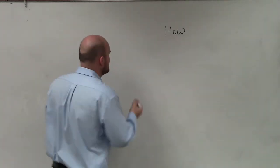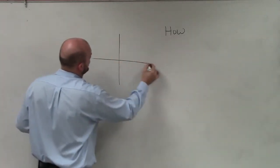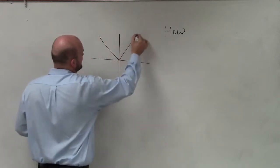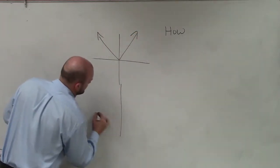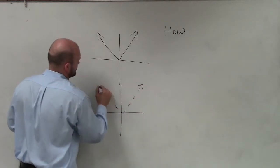Basically, what we're looking at is how do we determine for a graph, let's say it's an absolute value, is it going to be solid or dashed?